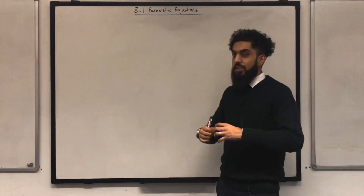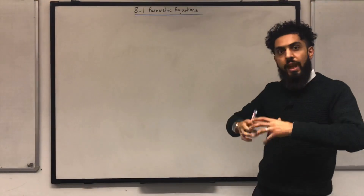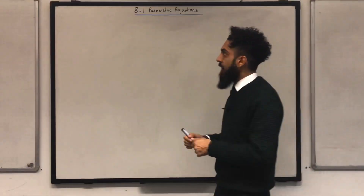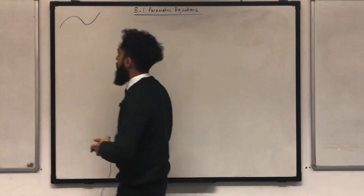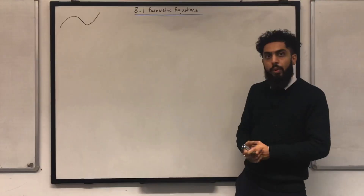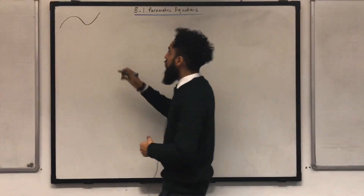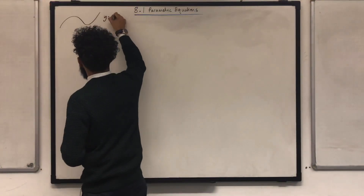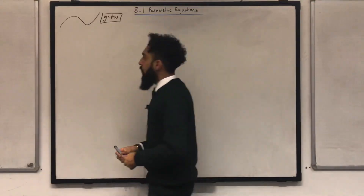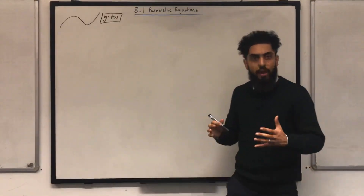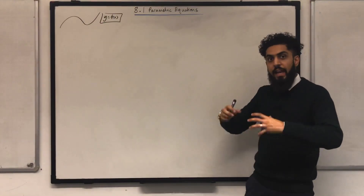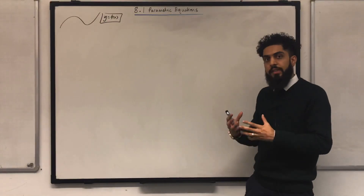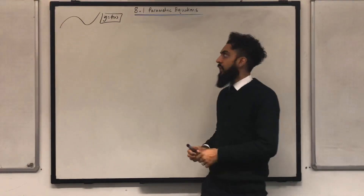I'm going to introduce this topic by drawing a general curve. This curve has equation y equal f of x. The equation y equal f of x connects y and x — it has a special name: it's called the Cartesian equation of the curve.